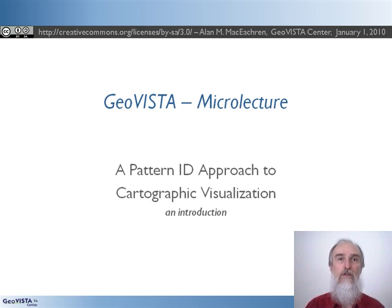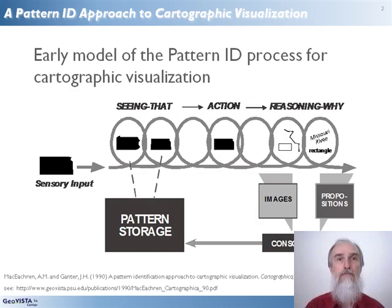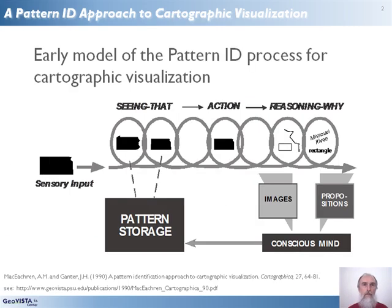Here, I'll be introducing some key ideas from my first publication to use the term visualization in the title. That paper, titled 'A Pattern Identification Approach to Cartographic Visualization,' was published back in 1990 and represents joint work with John Ganter, who was a master's student here at the time. The paper presents the conceptual underpinnings for what generated a couple of decades of subsequent research.